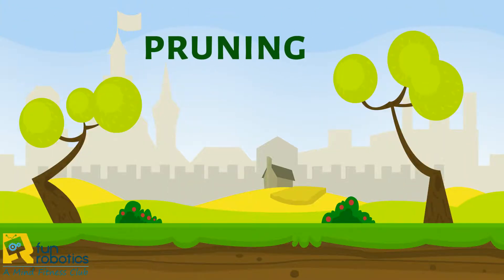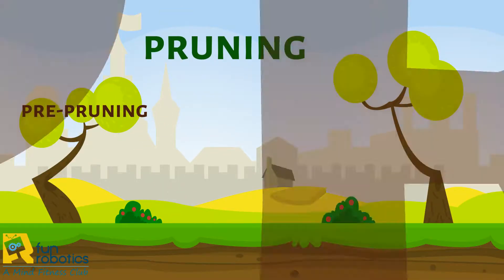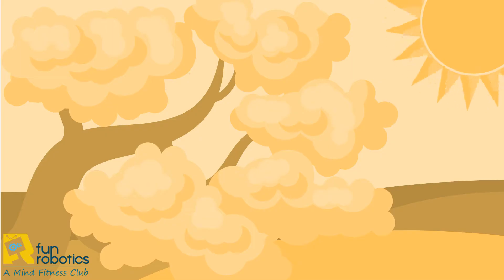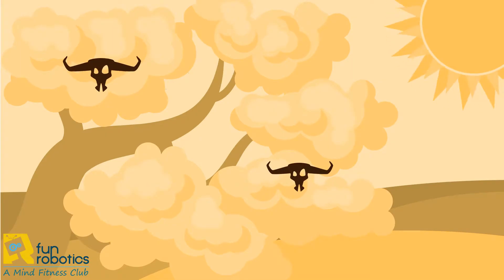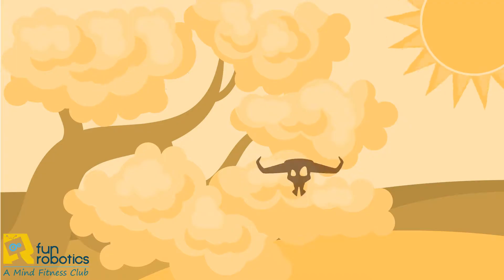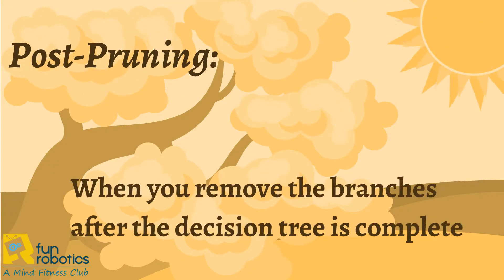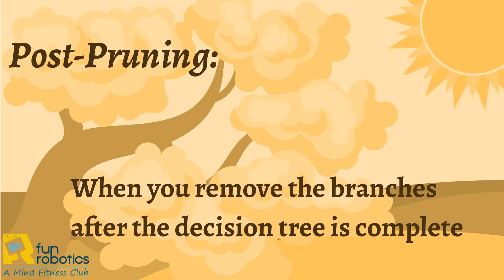There are two types of pruning: pre-pruning and post-pruning. Imagine you build up your decision tree and it is fully functional and ready to use. Then you go and analyze your decision tree, and you notice some weak and unnecessary branches. So you decide on removing these branches. This step is called post-pruning, because you decided to remove the branches after the decision tree is complete.